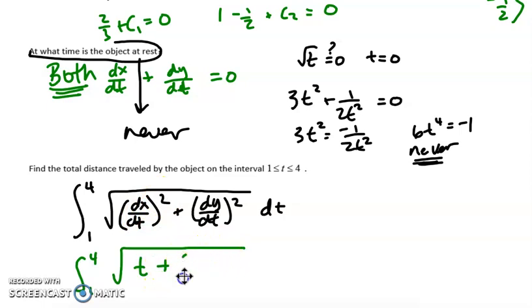And then for dy/dt, we have 3t² + 1/(2t²). And we're squaring that. And you're going to plug this into your calculator. Please do not try to do this by hand. And please do make sure you put it into your calculator to make sure you get out 63.598. And that does it for the first day of parametrics and vectors.